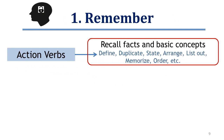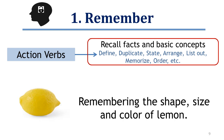The first sub-domain in the cognitive category is remembering. Learning at this level means simply developing the ability to recall or recognize data or information. Action verbs used to frame learning objectives at this level include define, duplicate, state, arrange, and others. For example, remembering the shape, size, and color of a lemon — but nothing to do with its taste, content, and so on.